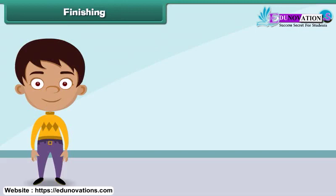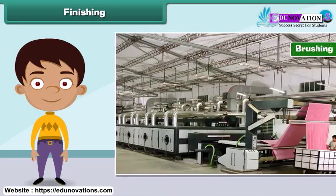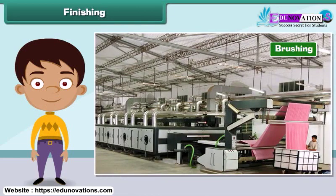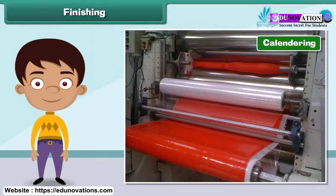The process that improves the appearance and usefulness of a fabric is known as finishing. Some important finishing treatments are: brushing, which removes short and loose fibers from a fabric; calendaring, which improves the smoothness and shine of a fabric; and bleaching, which removes the natural color of raw fabric.